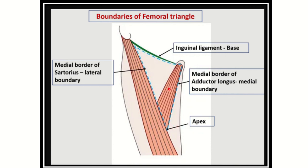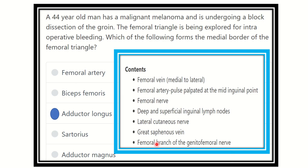So, reviewing the boundaries: the medial border is formed by the adductor longus, the base or upper part by the inguinal ligament, and the lateral boundary by the medial border of the sartorius. The apex is formed by the junction of these two muscles. Therefore, our answer is the adductor longus muscle, which forms the medial border of the femoral triangle.